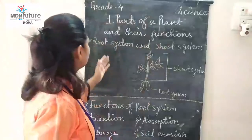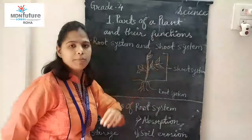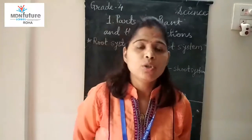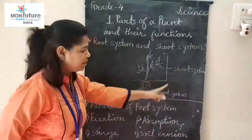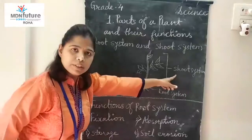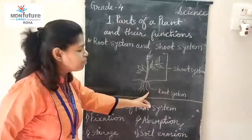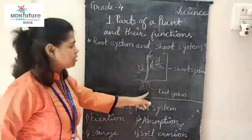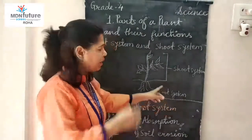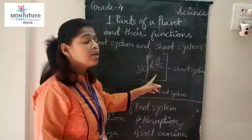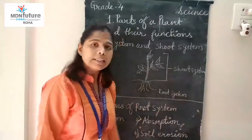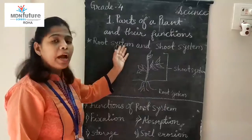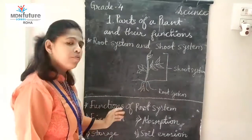Hello students, today we shall learn more about root system and shoot system. We already know that the whole plant can be divided into two parts: root system and shoot system. The part of the plant that grows under the soil is called root system, and the part that grows above the soil is called shoot system. Let us learn about root system and its important functions.